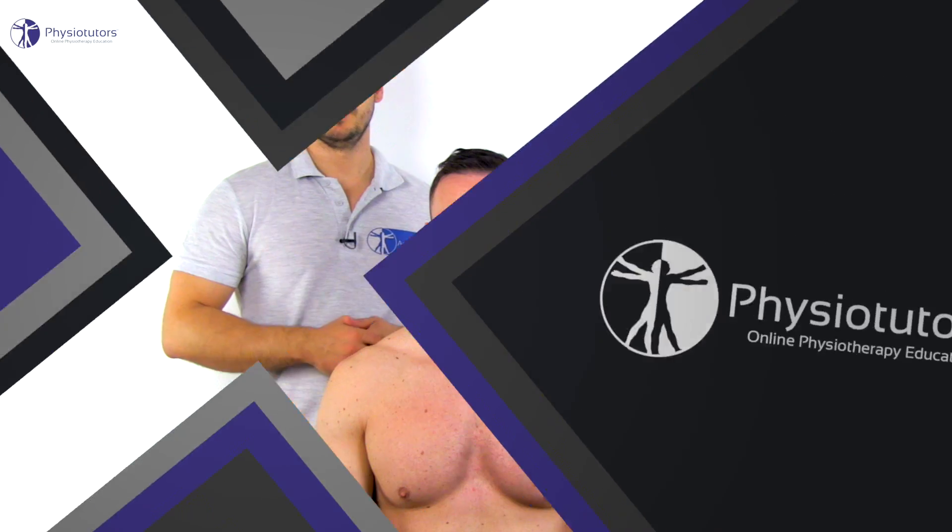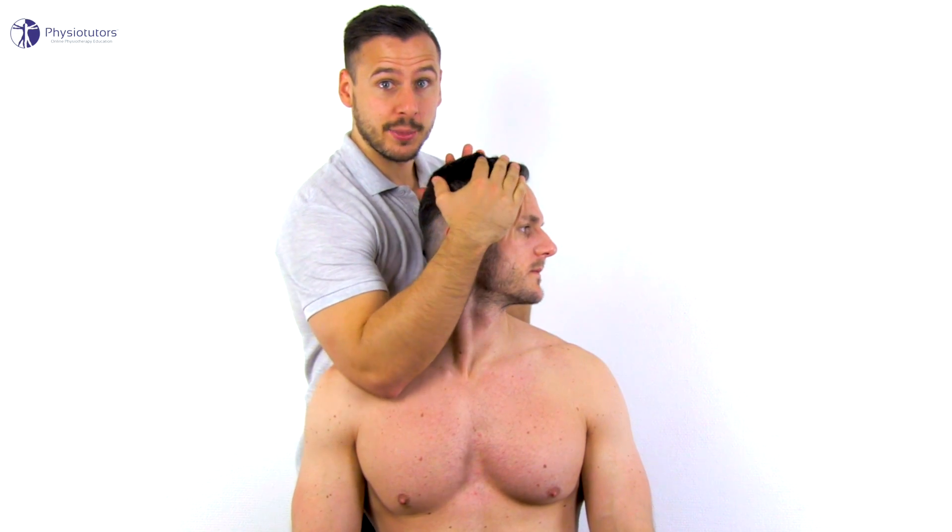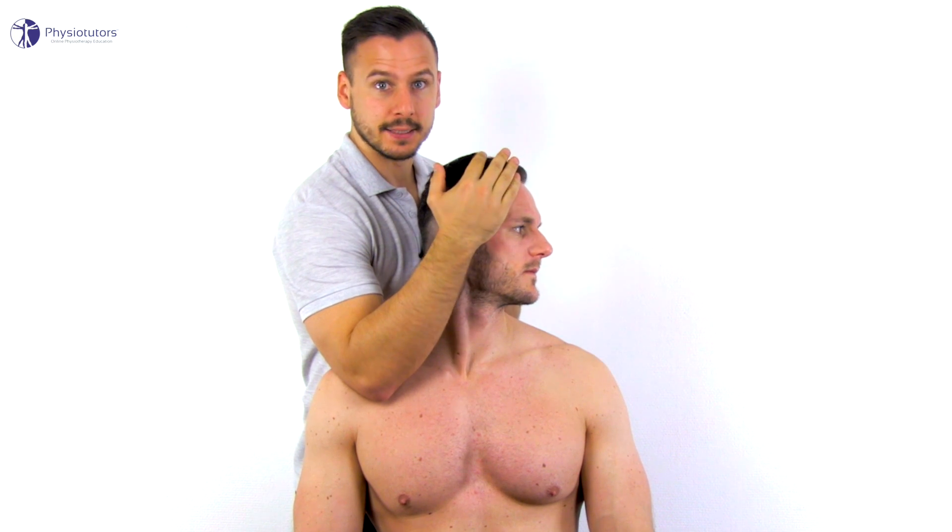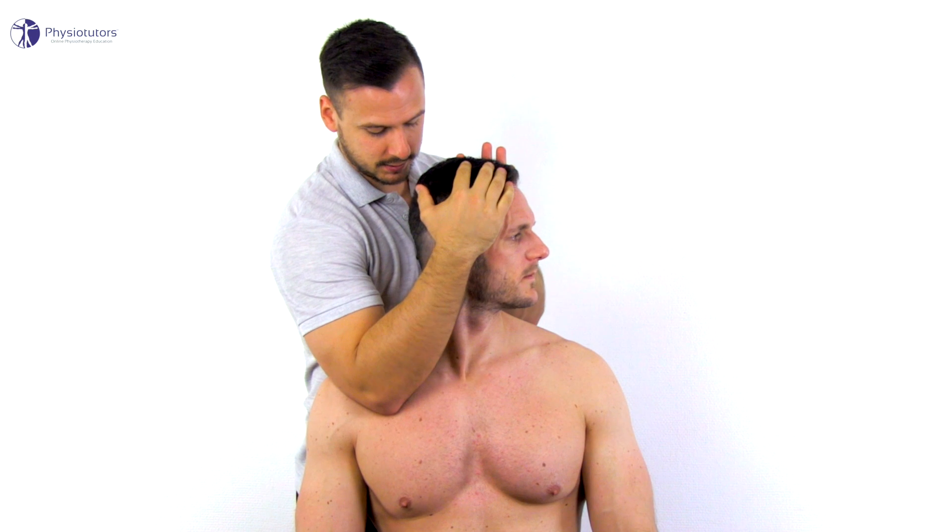To conduct the test, the patient is in sitting position. The patient's head is rotated away from the affected side and then lateral flexion is added in the opposite direction than the rotation, so that the ear moves towards the patient's chest.